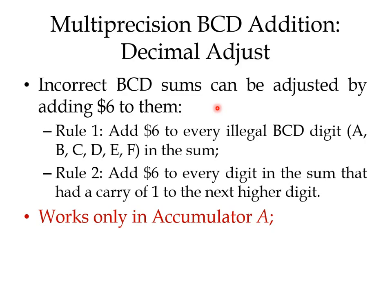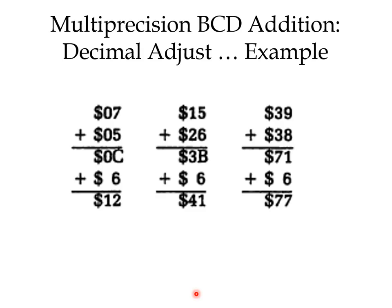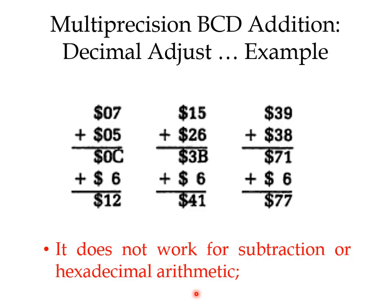The decimal adjust only works in accumulator A — it can only fix the sum if you keep the sum in accumulator A. If the sum is not in A, you first have to move it to A. Then you write the instruction DAA. DAA is an inherent instruction so you don't have any operand, and it automatically fixes the sum stored in accumulator A. Also note: decimal adjust does not work for subtraction, doesn't work for hexadecimal arithmetic — it only works for BCD, binary coded decimal.